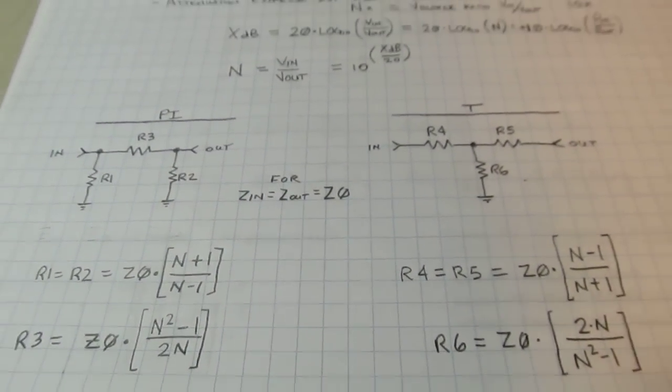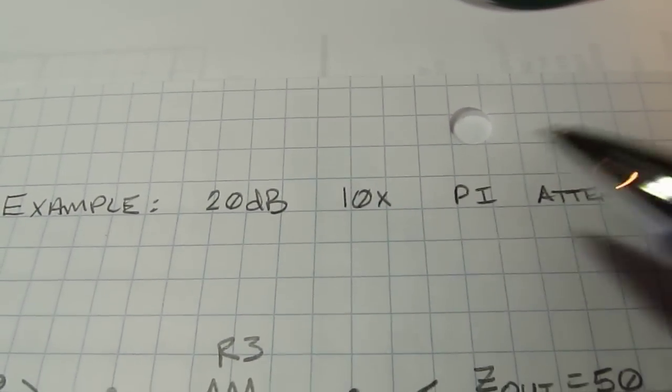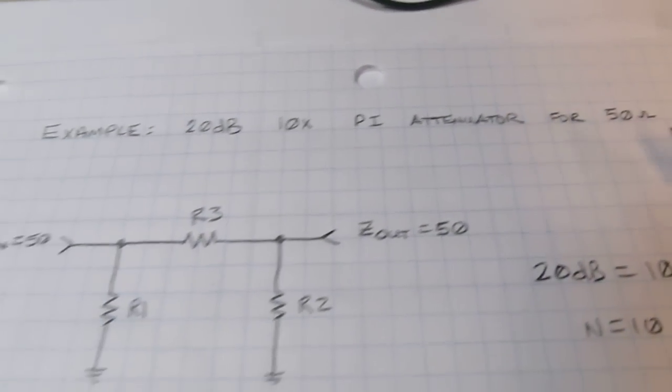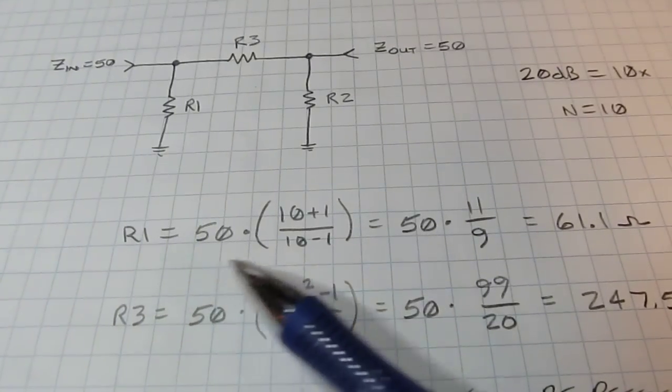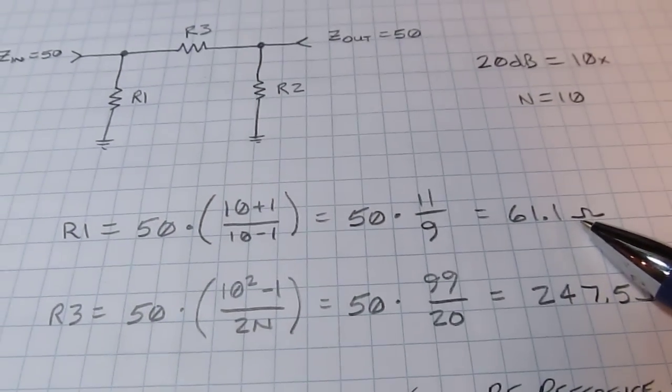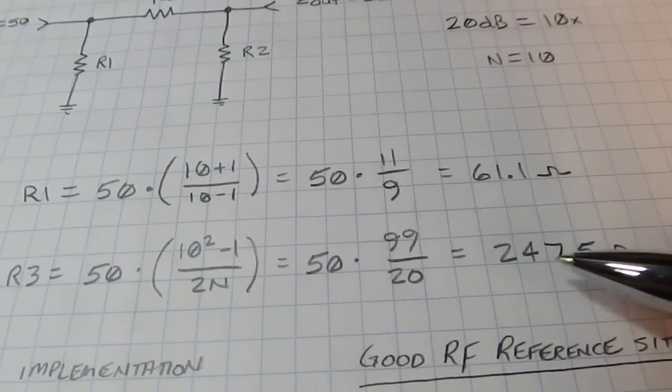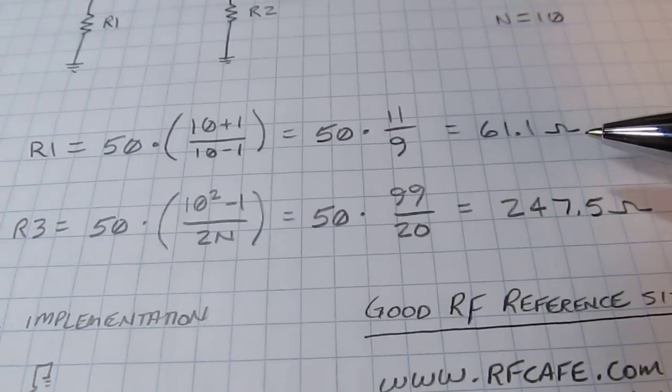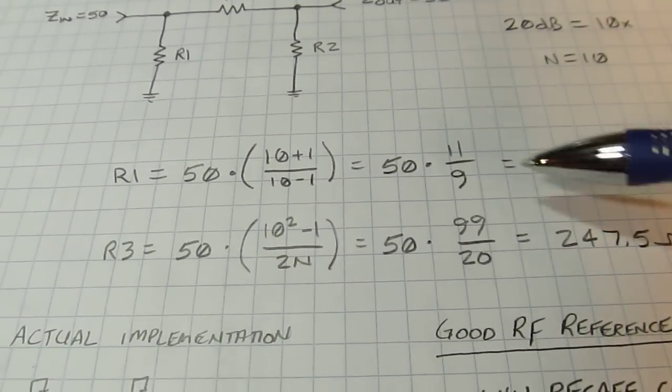So let's talk about specifically what I put together here. In my example, I wanted a 20 dB attenuator, that's a 10x, and I wanted to do a pi just simply because mechanically it worked out better for what I wanted to build. So there's our structure - we wanted 20 dB or 10x attenuator. So running through these calculations, I needed essentially 61 ohms going to ground on either side and a 247 ohm, 247 and a half ohm series resistor. Well, I didn't have these values handy.